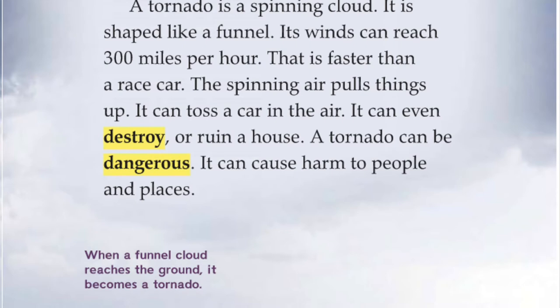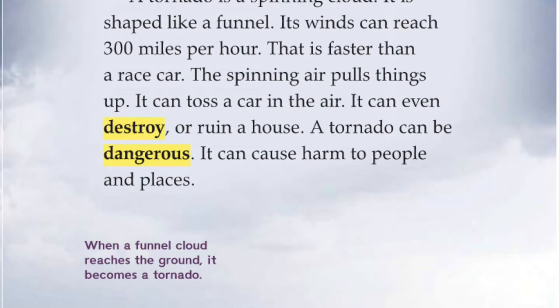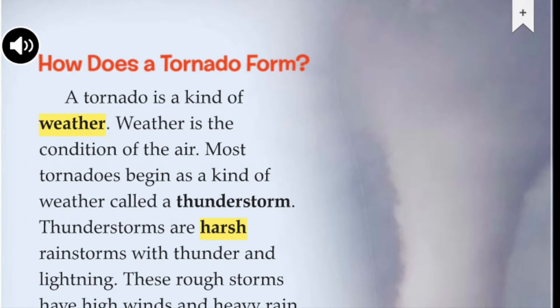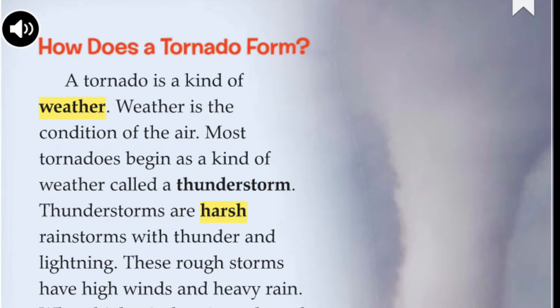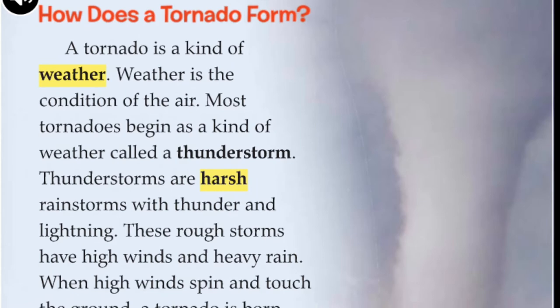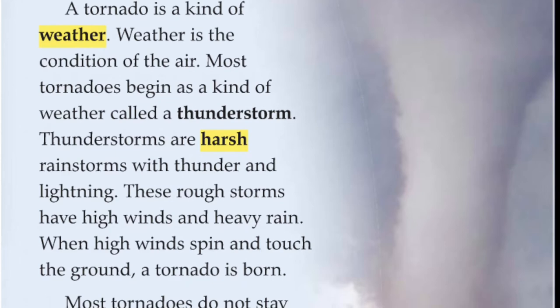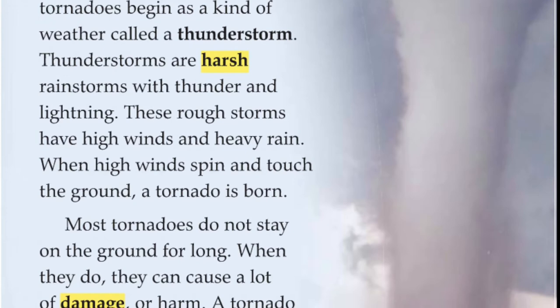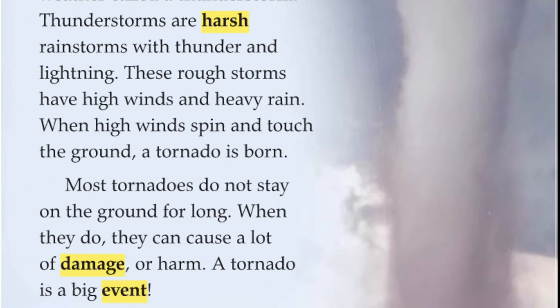Caption: When a funnel cloud reaches the ground, it becomes a tornado. How does a tornado form? A tornado is a kind of weather. Weather is the condition of the air. Most tornadoes begin as a kind of weather called a thunderstorm. Thunderstorms are harsh rainstorms with thunder and lightning — rough storms with high winds and heavy rain. When high winds spin and touch the ground, a tornado is born.